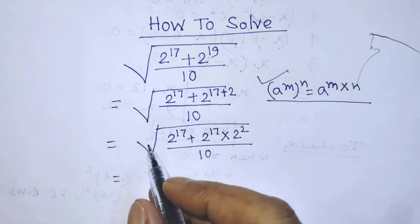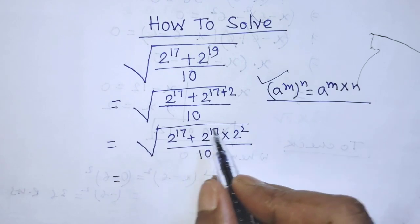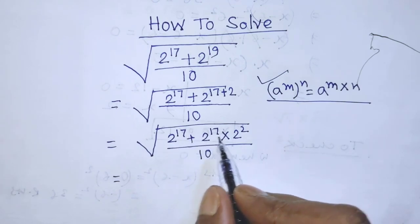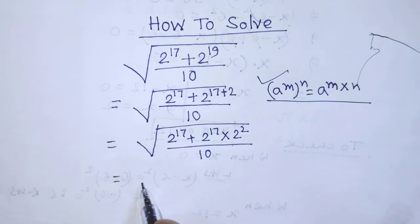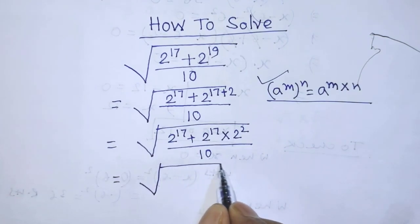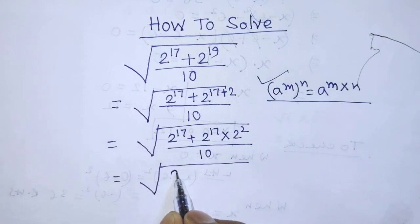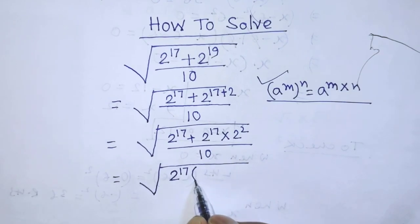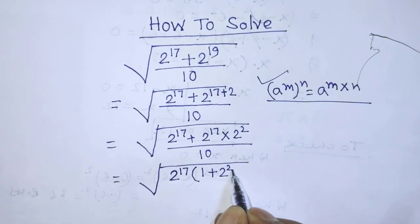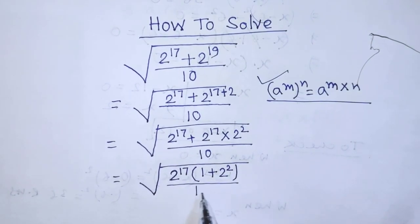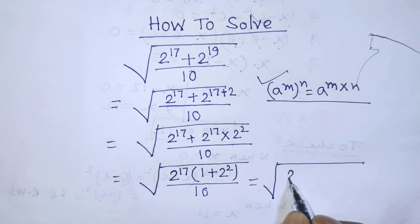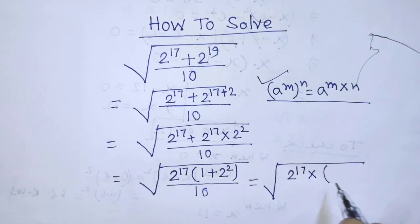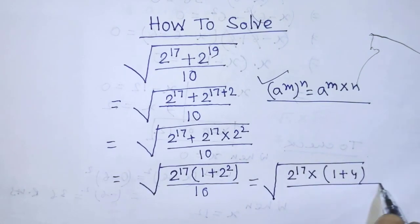In this algebraic expression, inside the square root, in the place of numerator there are two terms. The common factor of both terms is 2 to the power 17. So we can write: square root, and inside this square root, in the place of numerator, we have to write 2 to the power 17 times 1 plus 2 to the power 2, over 10. So we get square root of 2 to the power 17 times 1 plus 4, over 10.